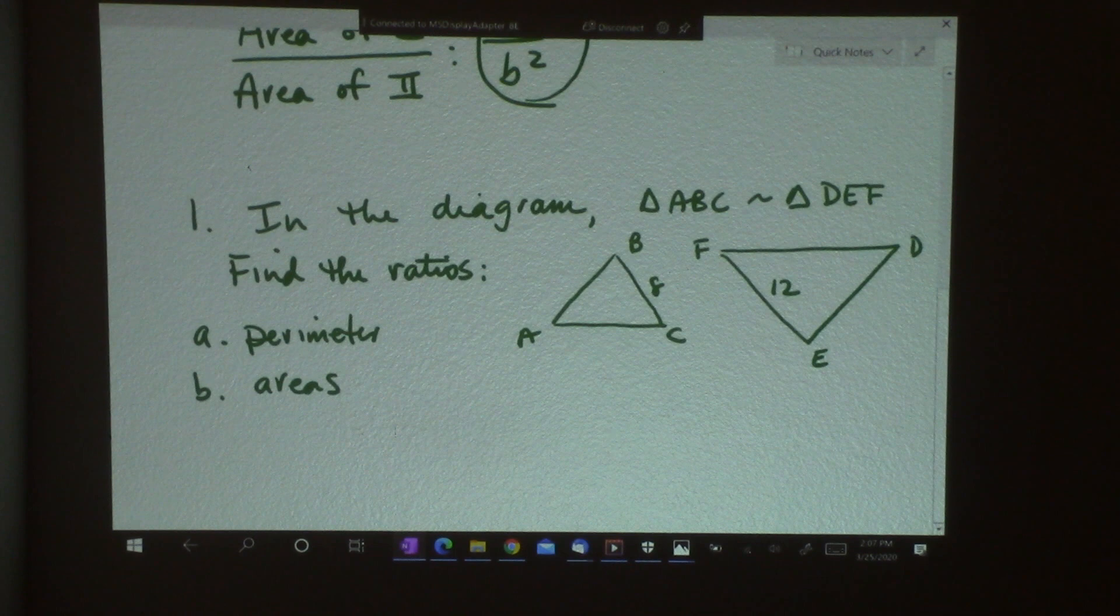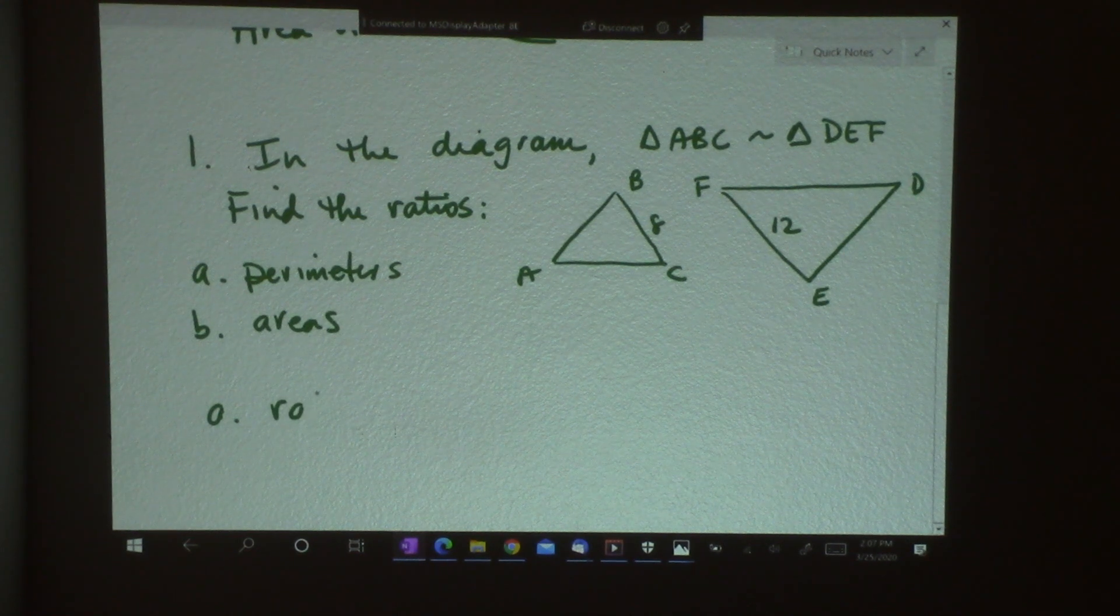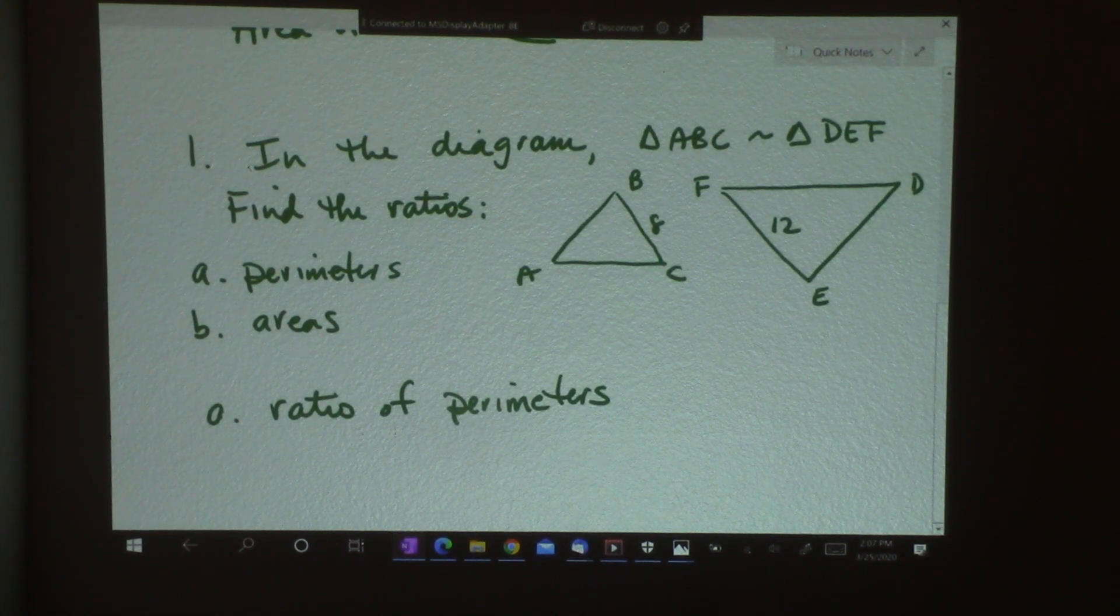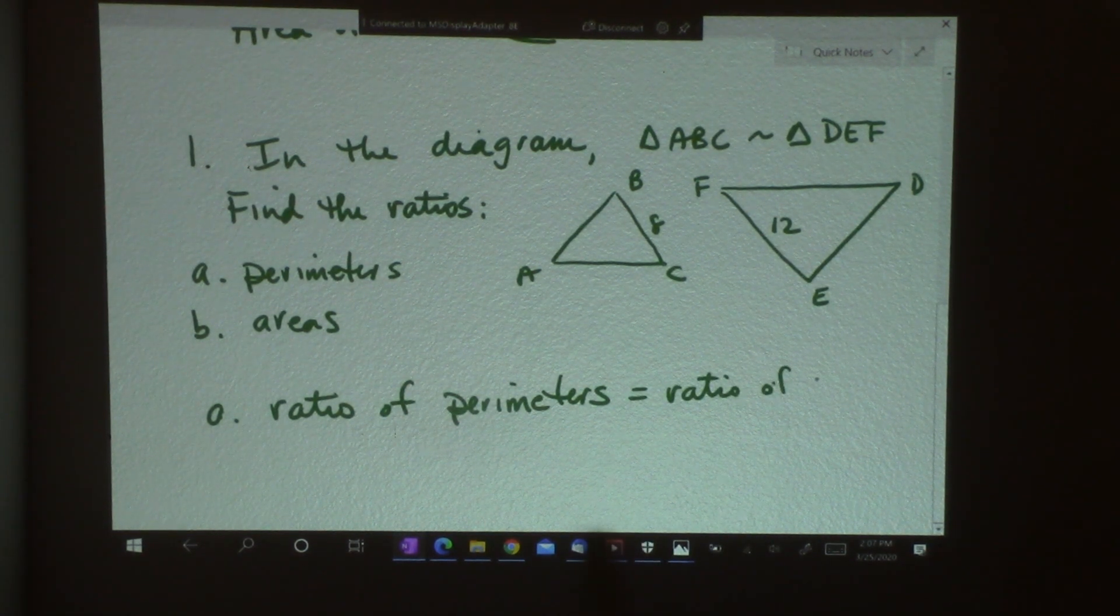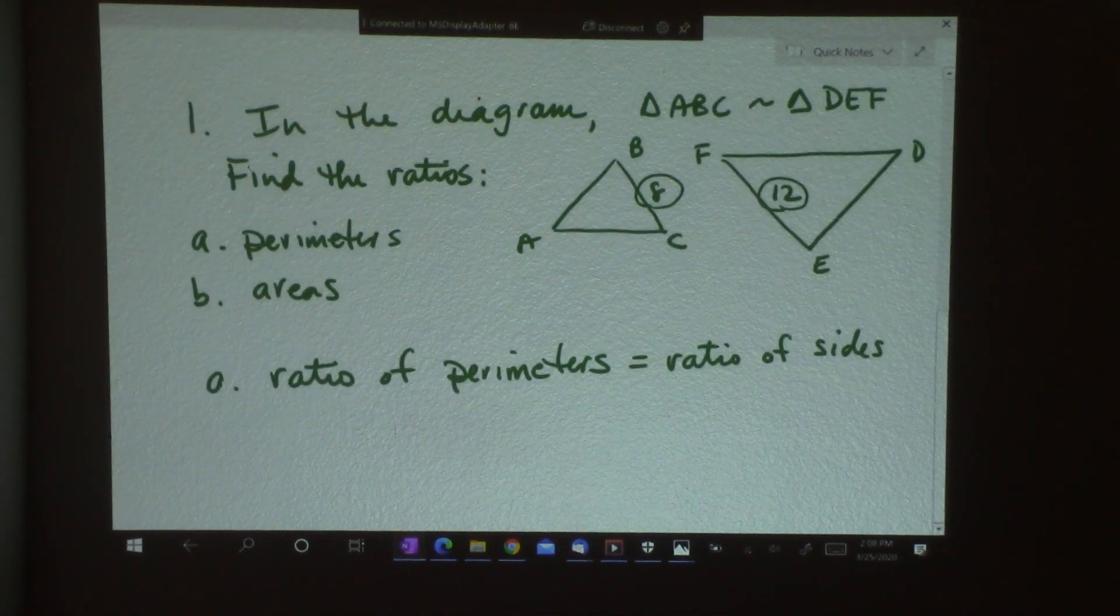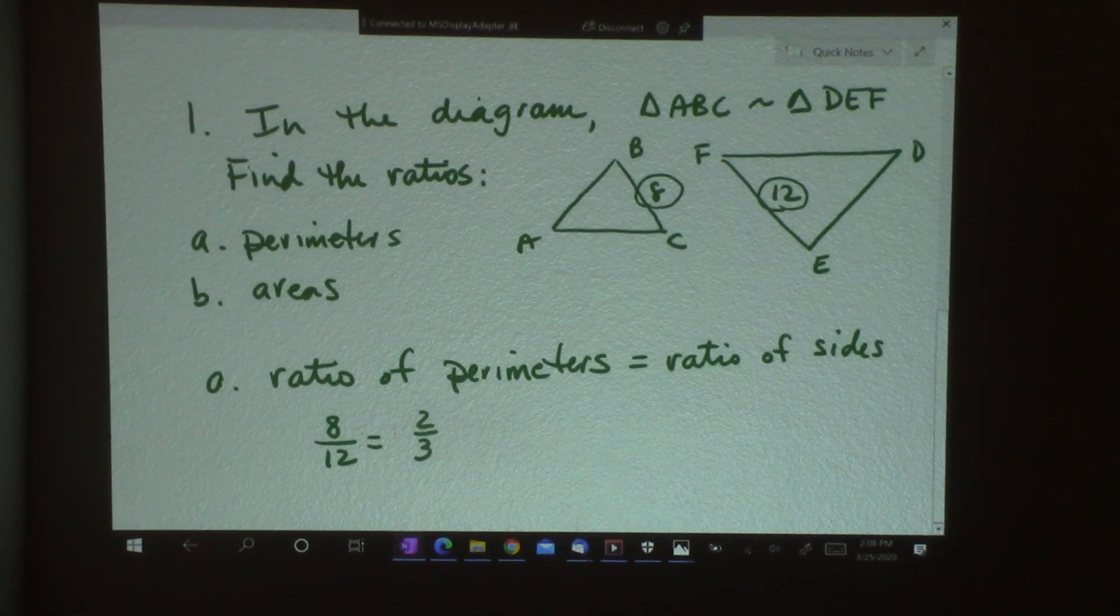Perimeters has to do with adding up all the sides. So for A, if I want to find the ratio of perimeters, that refers to just the lengths. So if I know the ratio of the sides, I'll have the ratio of the perimeters. So I just have to figure out the ratio of the sides. Well, I've got 8, and I've got 12. So I'm going to write 8 over 12, and then reduce that. So that becomes 2 over 3. So the ratio of my perimeters is 2 over 3.